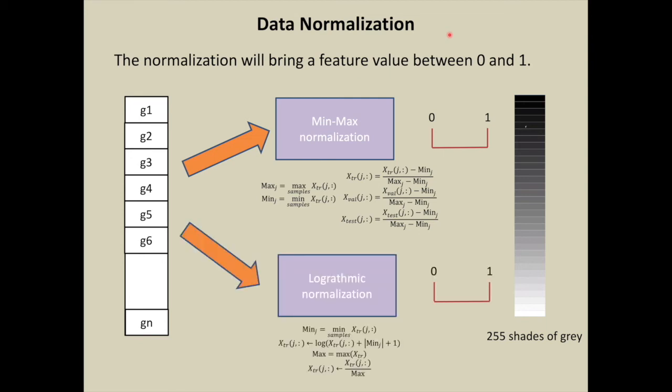First is min-max normalization and second is logarithmic normalization. The normalization transforms a value into one of 255 gray shades. This is an important procedure for image transformation.